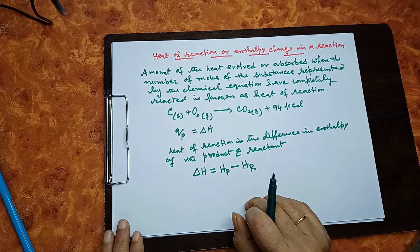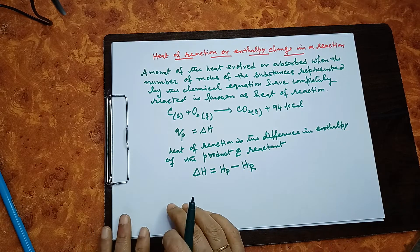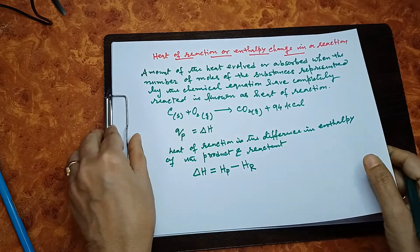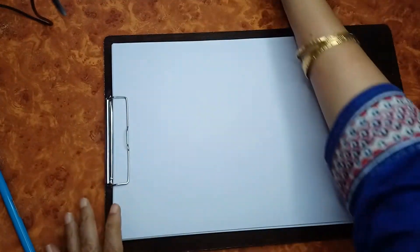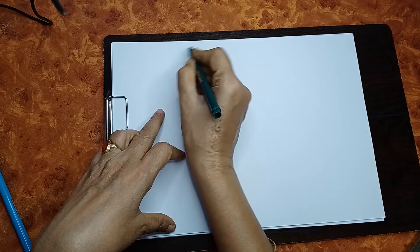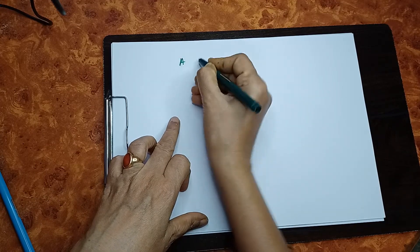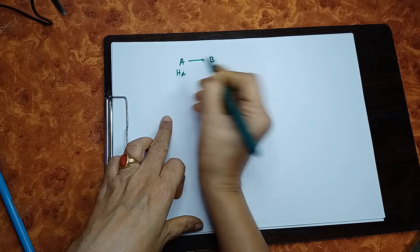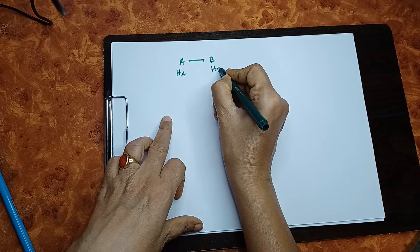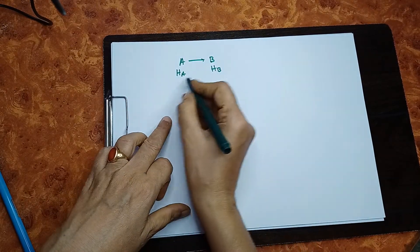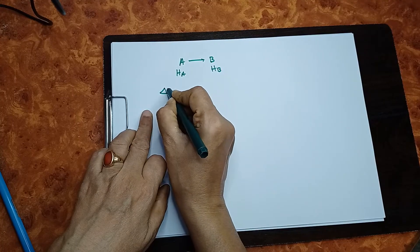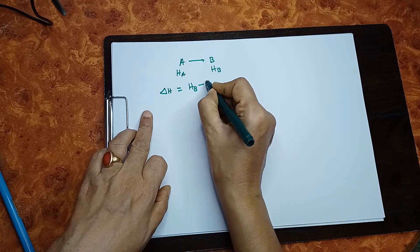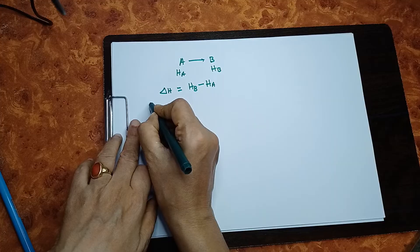Now, how does it vary with temperature? That is given in Kirchhoff's equation, and we are going to derive it. Say the reactant is A and the product is B. The enthalpy of reactant A is HA and enthalpy of product B is HB. The heat of reaction, that is the change in enthalpy delta H, will be HB minus HA. Now differentiate.